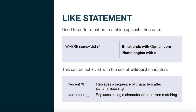This can be achieved using wildcard characters. There are two types of wildcard characters used in the LIKE statement. The first is the percent sign (%), which replaces a sequence of characters after matching a pattern. The second is the underscore (_), which replaces a single character after pattern matching. So keep in mind: percent replaces a sequence of characters, whereas underscore replaces a single character.